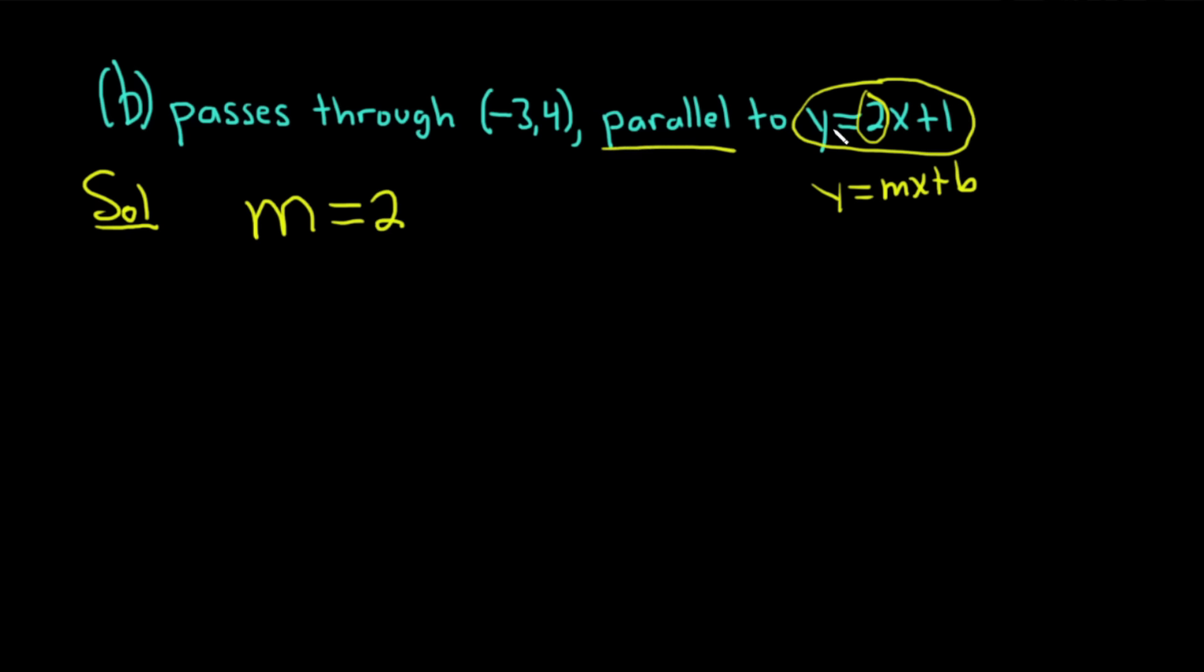So again, if our line is parallel to this line, then our line is going to have the same slope as this line. And this line has a slope of 2. Therefore, ours has a slope of 2. As far as our point, it's going to be this one here, x1, y1.